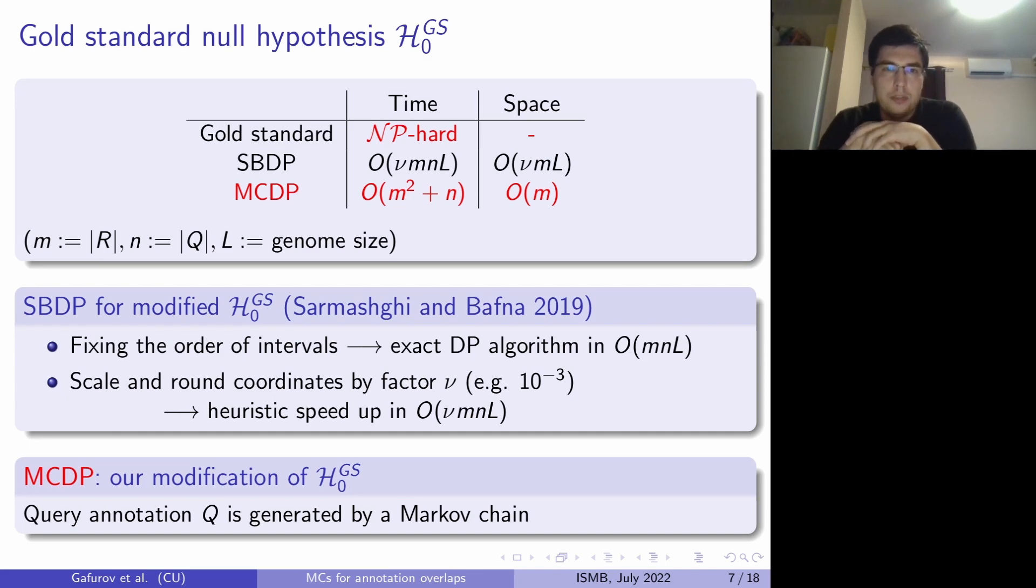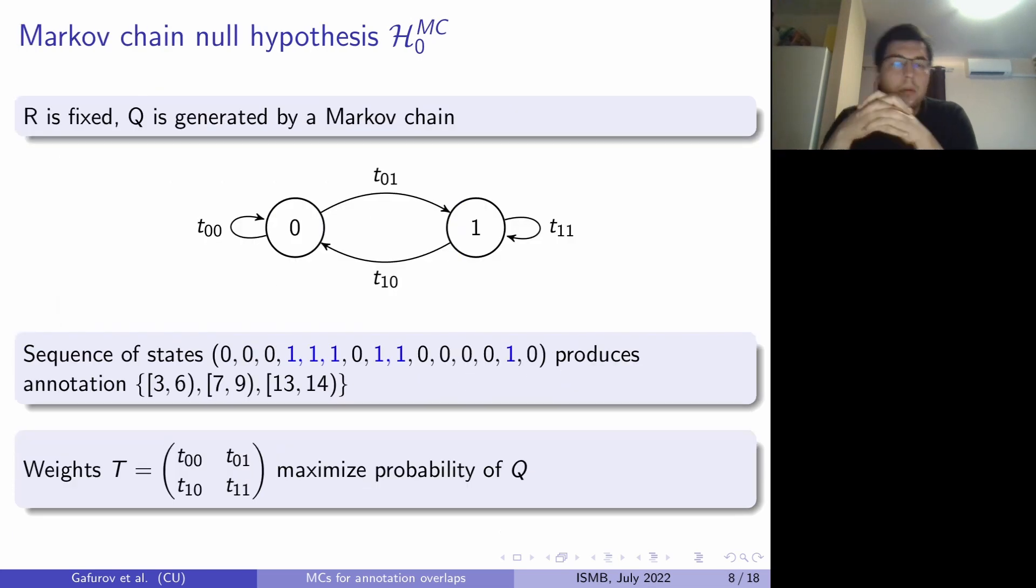And since it's too slow they also came up with a heuristic where they scale all the coordinates and multiply by a small constant and then round it down and that achieves a linear speedup in time. And we are here to present you a new approach which we'll call MCDP and our null hypothesis will be based on Markov chains. In the next slides I will show you the way to formulate that hypothesis and in which way which allows us to achieve an algorithm to compute the p-value in O(M squared plus N) time with the main advantage that it is independent of the genome size so it could be run on any genome sizes.